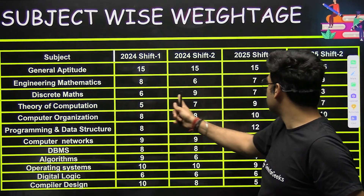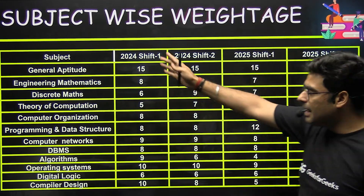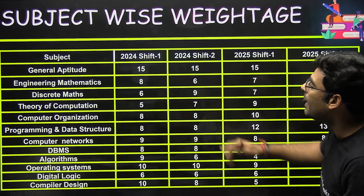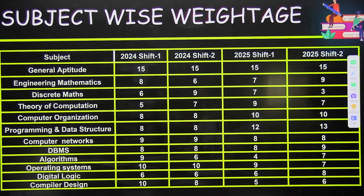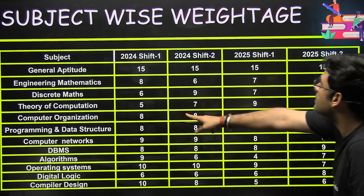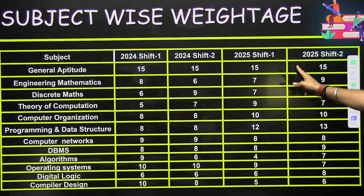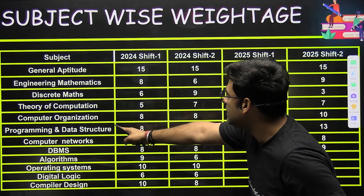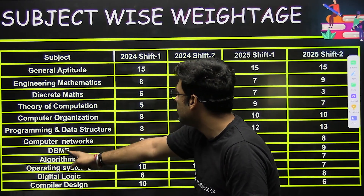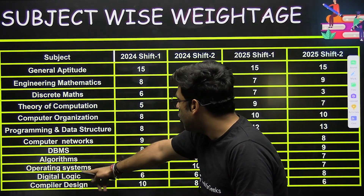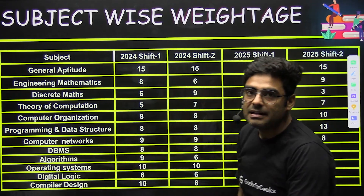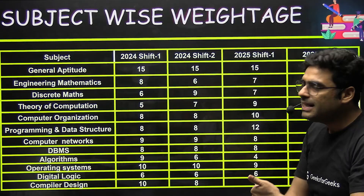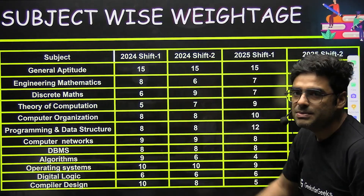Discrete maths had 6, 9, 7, and 3 marks across shifts — placed in descending order. Theory of computation is also important: 5 and 7 marks, and in 2025 it carried 9 and 7 marks. Similarly, computer organization, programming and data structures, computer networks, DBMS, algorithms, operating systems, digital logic, and compiler design are all there. You can see the marks and weightage and judge which subjects are most important.